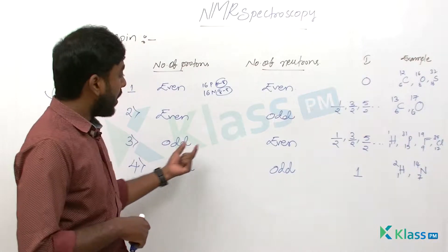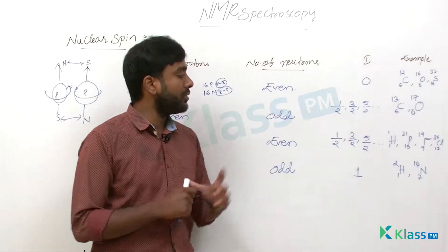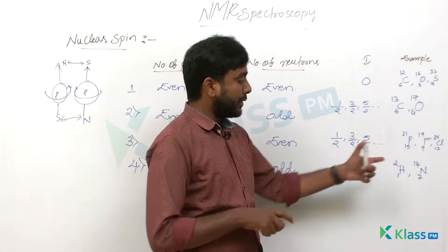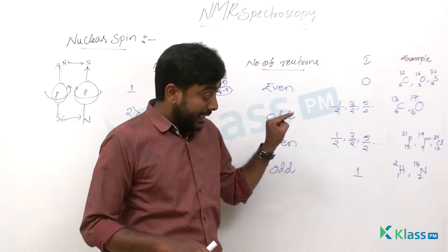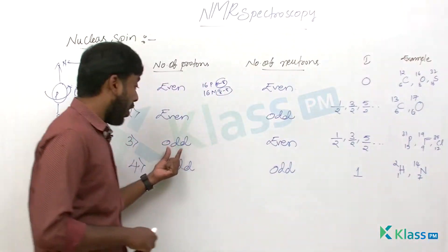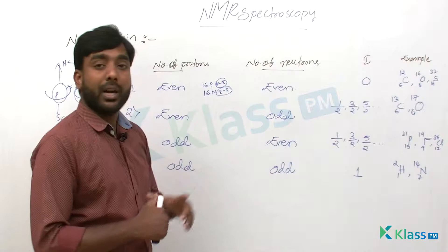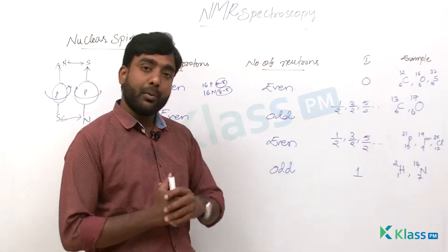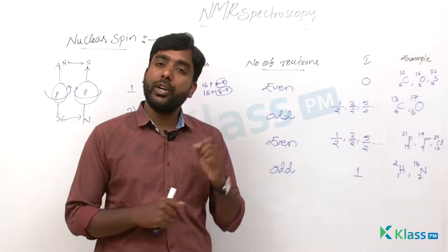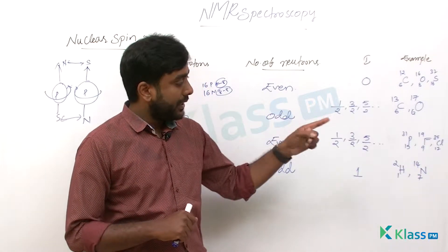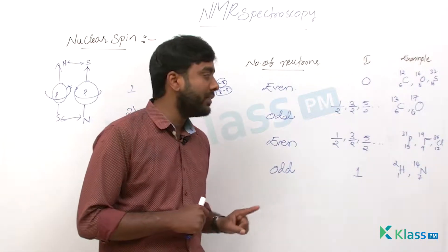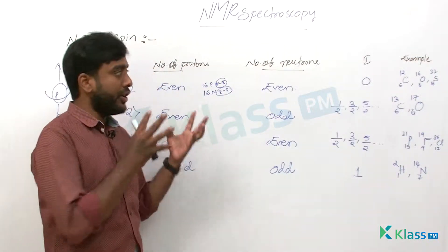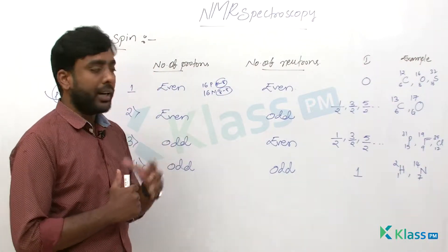Another type is odd-even: the number of protons is odd but the number of neutrons is even. For example, P-31 has 15 protons (odd) and 16 neutrons (even). F-19 has 9 protons (odd) and 10 neutrons (even). Cl-35 has 17 protons (odd) and 18 neutrons (even). All such nuclei are NMR active.